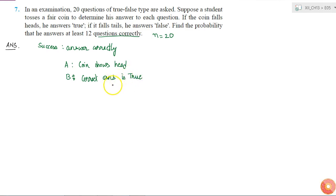So what is the probability of success? Probability of success is simply probability of A into probability of B, because tossing of the coin and the answer of the question, these two are independent events. I can write the intersection of these two as simply product of these two.